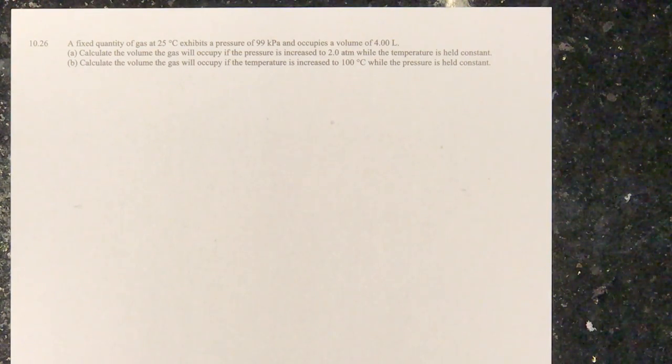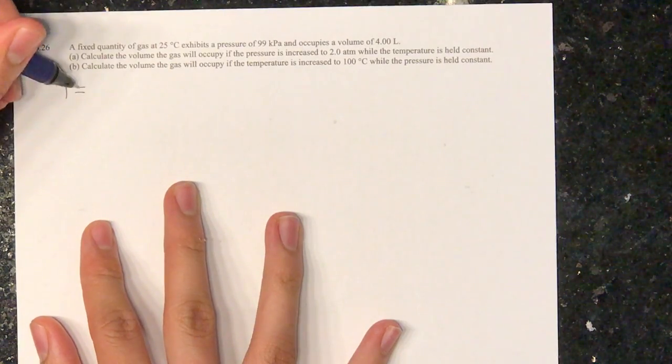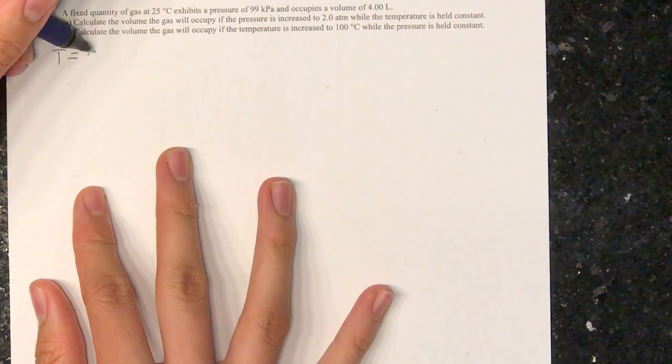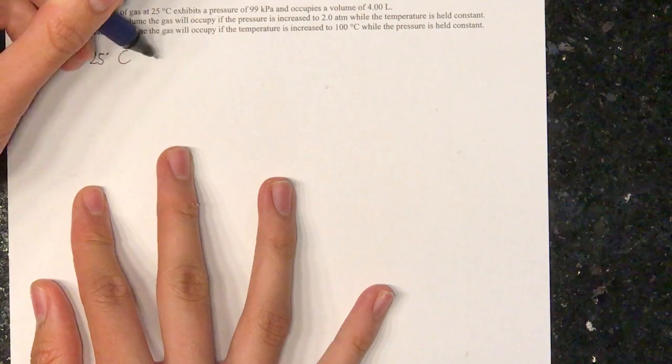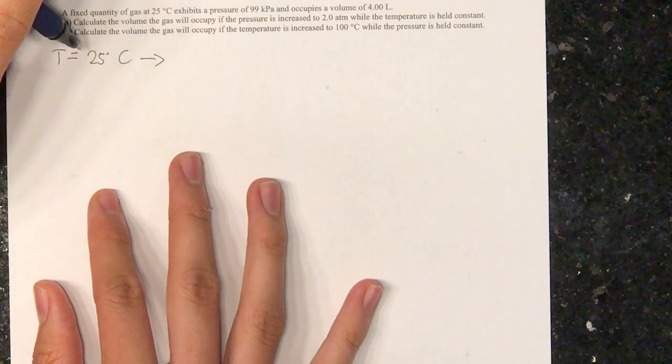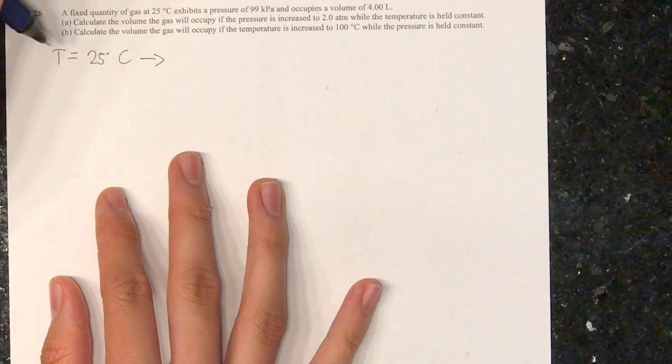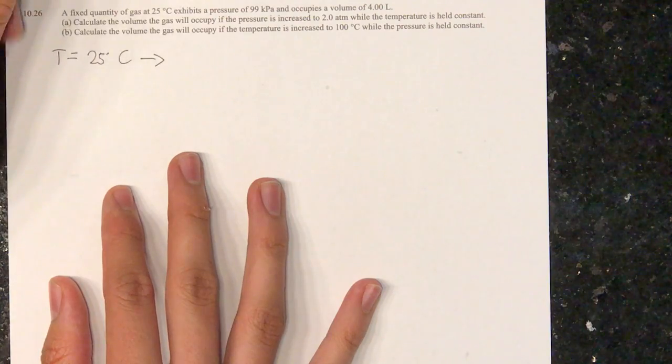Part B, calculate the volume the gas will occupy if the temperature is increased to 100 degrees Celsius while the pressure is held constant. The first thing we're going to do is transform this from degrees Celsius to Kelvin because in this kind of exercise we always have to use Kelvin. That's the standard unit.